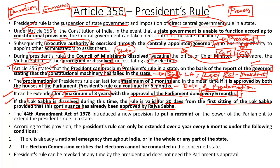Article 356 was amended through the 44th Amendment Act of 1978 in order to put a restraint on the powers of the central government with regard to the proclamation of President's rule, in the backdrop of the national emergency which was in place between 1975 and 1977. This provision had been misused by various central governments to target state governments formed by opposition parties.